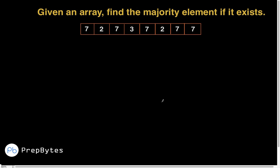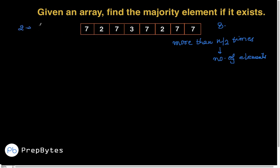The question is: given an array, find the majority element if it exists. Any element occurring more than n/2 times is the majority element, where n is the number of elements. For example, with eight elements, any element with frequency greater than four is the majority element. Here, the frequency of 7 is five, so 7 is the majority element. Try to solve this on your own before continuing.